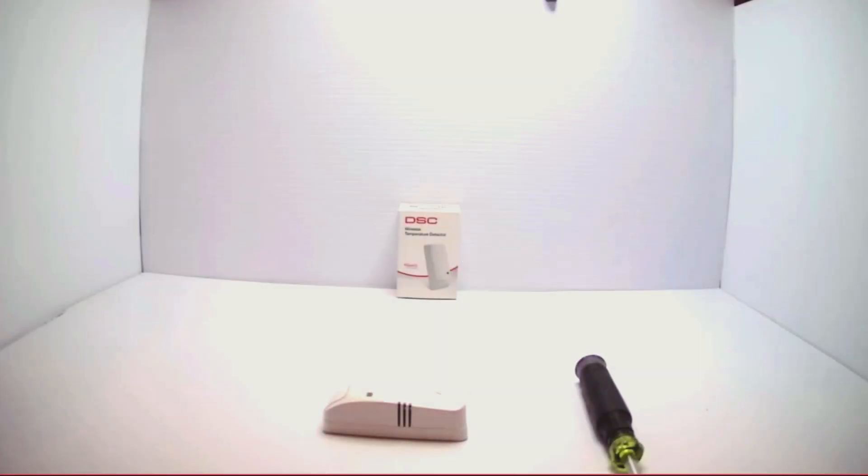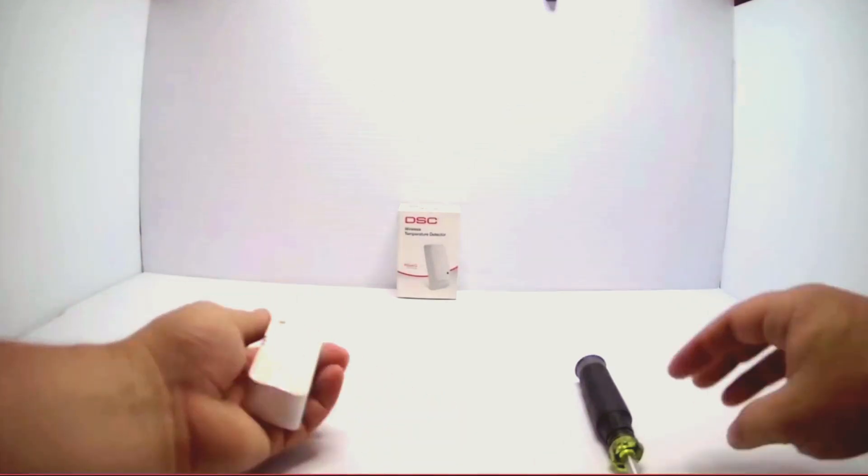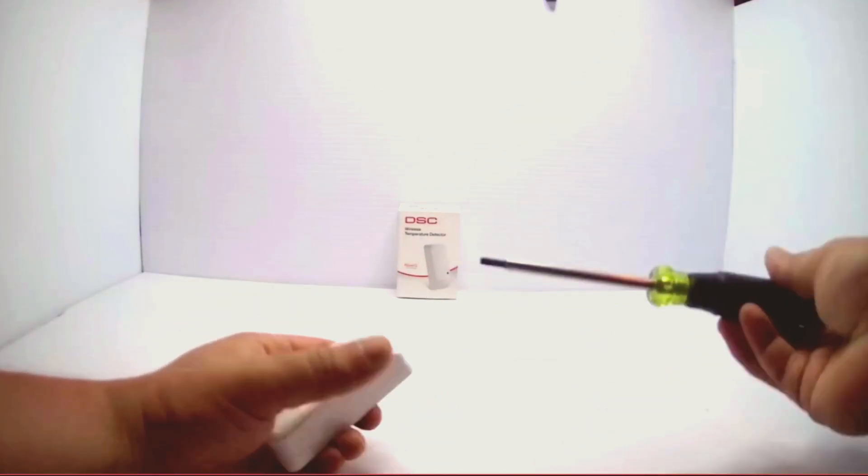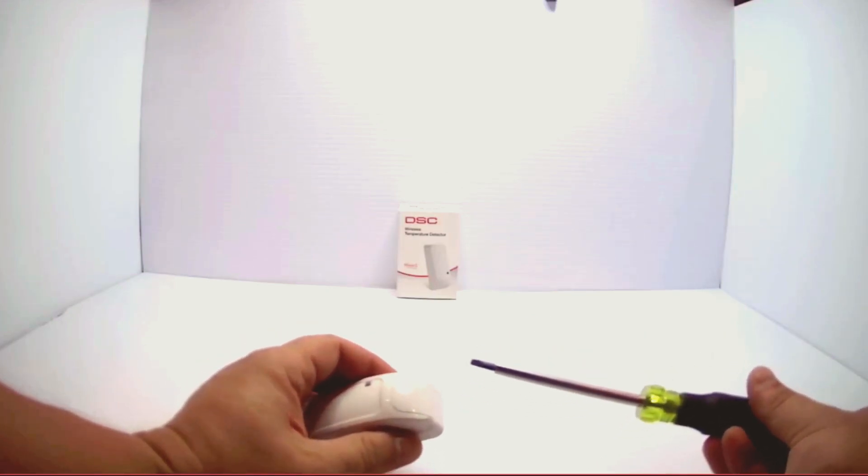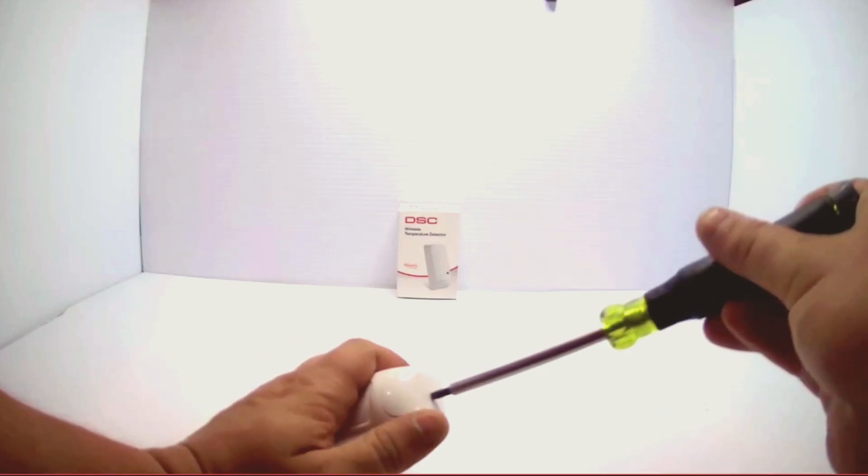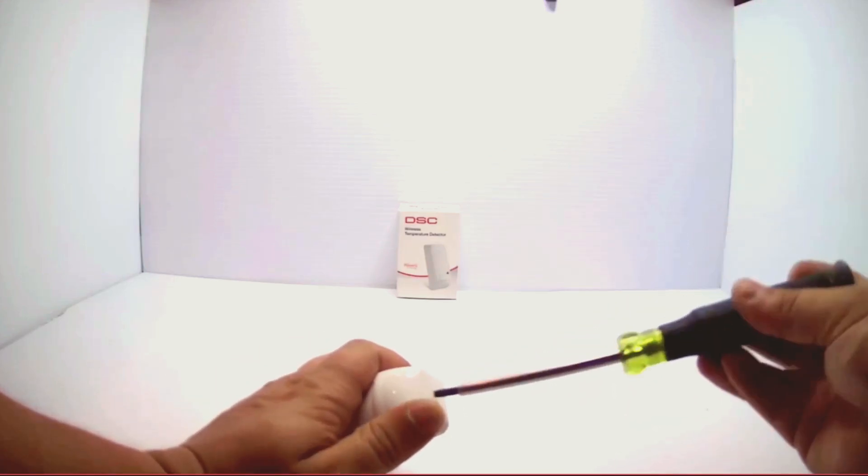How to replace the battery of a PG 9905 wireless temperature detector. First, when you find your detector, commonly found in garages or rooms with water lines, you will see the top. You'll want a screwdriver or something that you can just twist and pop the cover right off.